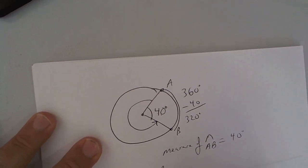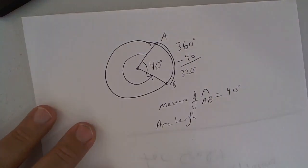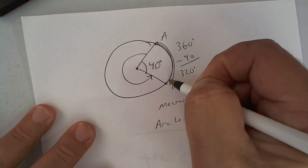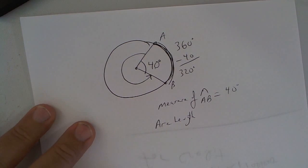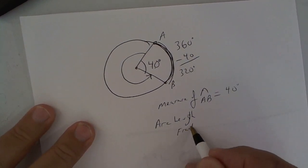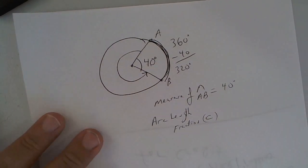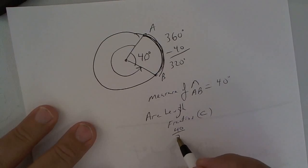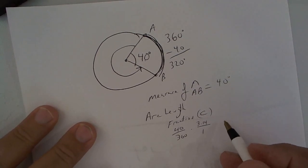However, the arc length, how long it actually is, the distance from there to there, you would have to use the formula fraction times circumference. So the fraction is 40 over 360 times pi times diameter.